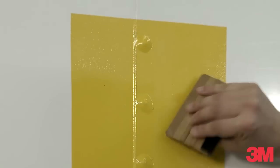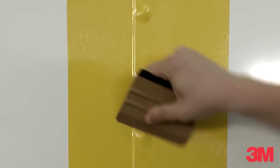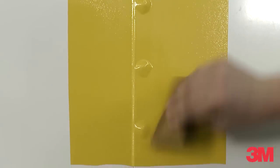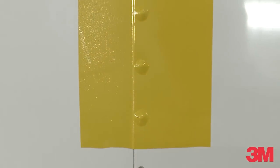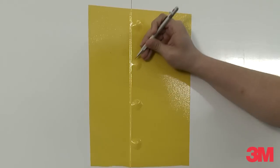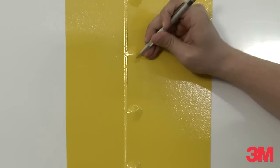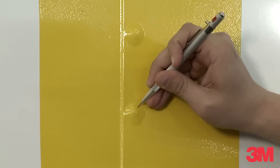First we'll squeegee the film as tight as possible, trapping a little bit of air around each rivet. Next, we're going to use our 3M air release tool to pop just a few holes around these.